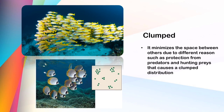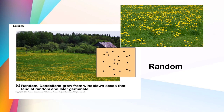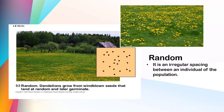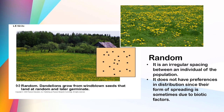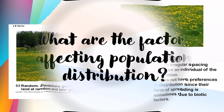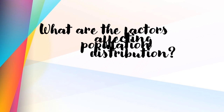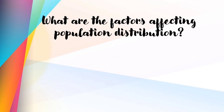Another example is the hunting process of hyenas — they hunt in a pack to ensure they will catch prey. Next is random distribution, which is an irregular spacing between individuals of a population. It does not have preferences in distribution since their form of spreading is sometimes due to biotic factors. For example, dandelion seeds are randomly distributed by the wind. What are the factors affecting population distribution?